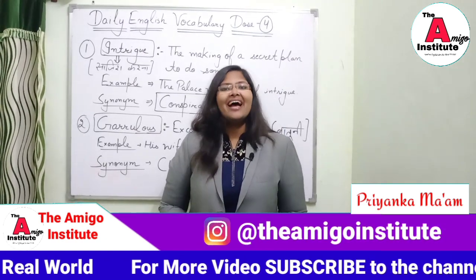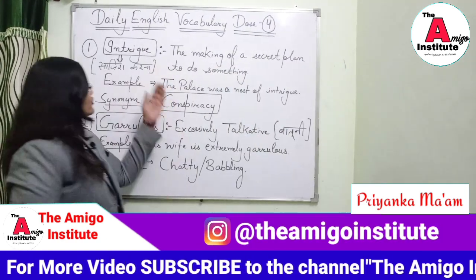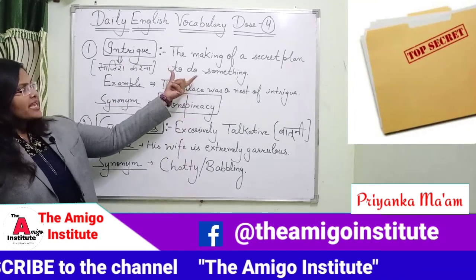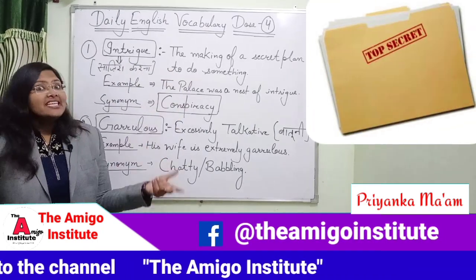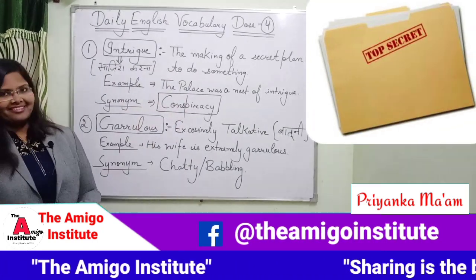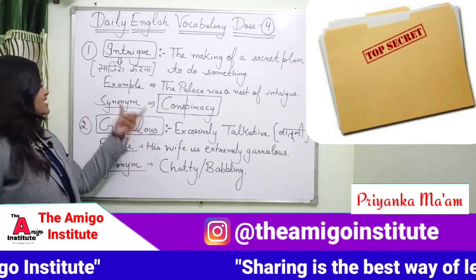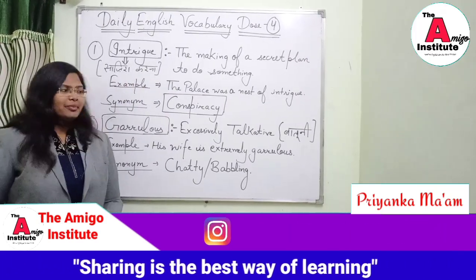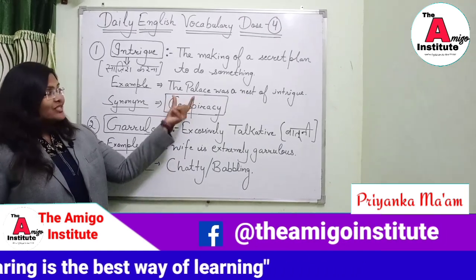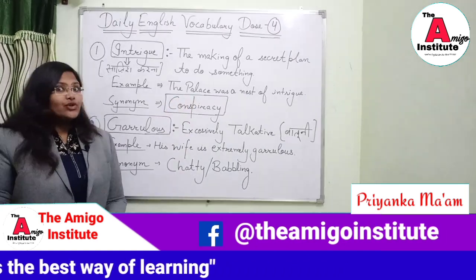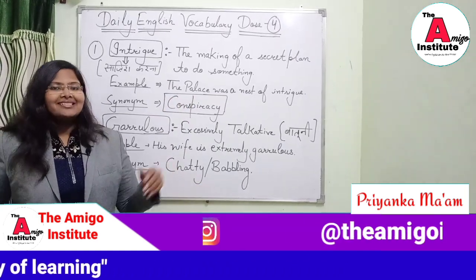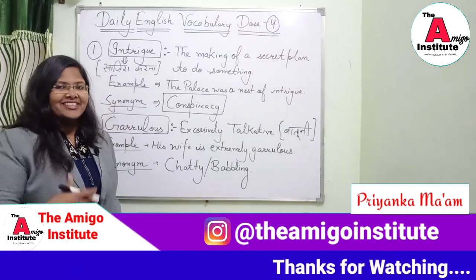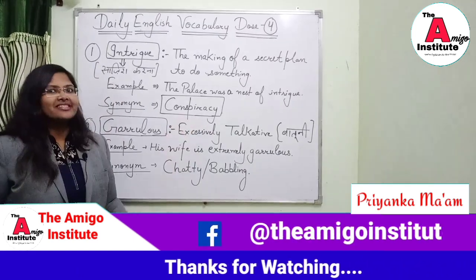The first word that I have for you is intrigue. Intrigue means the making of a secret plan to do something. In Hindi, it is saajish karna. Let's take an example: the palace was a nest of intrigue — wo saajisho ka jal tha. Its synonym is conspiracy.